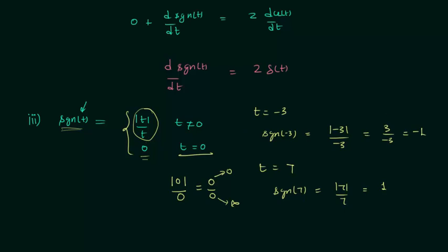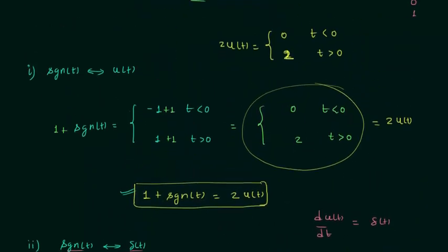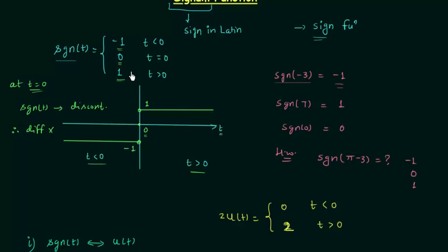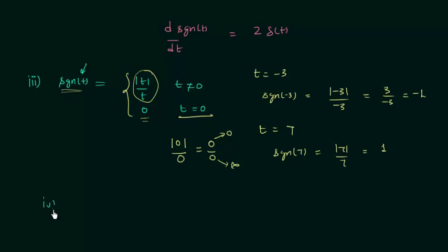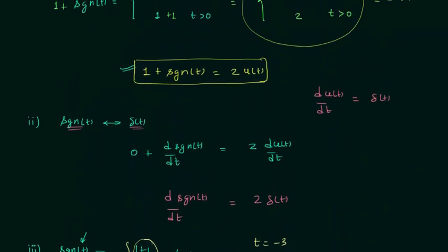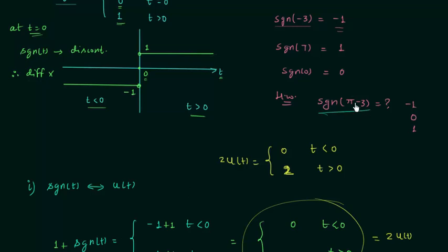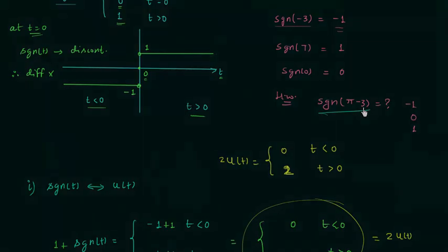In the fourth property, if you differentiate |t| with respect to t, it is equal to sgn(t), and this is true only when t is not equal to 0. So this is all for this lecture. The homework problem is to find sgn(π − 3) — once you have your answer, post it in the comment section. See you in the next one.